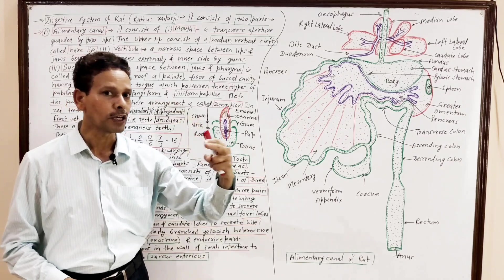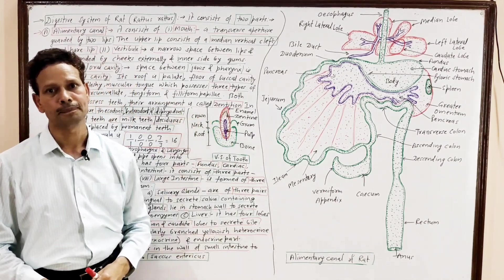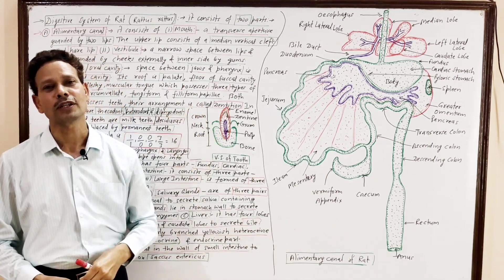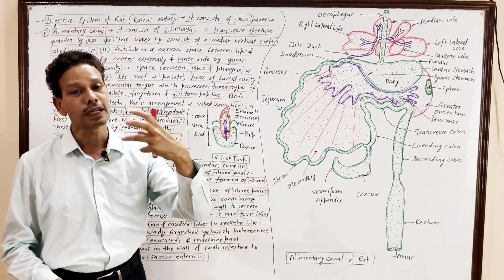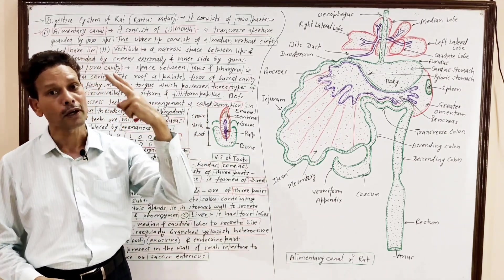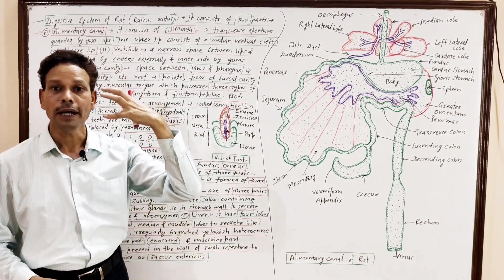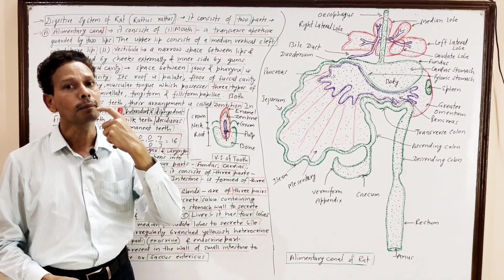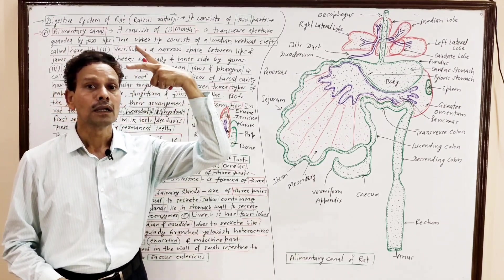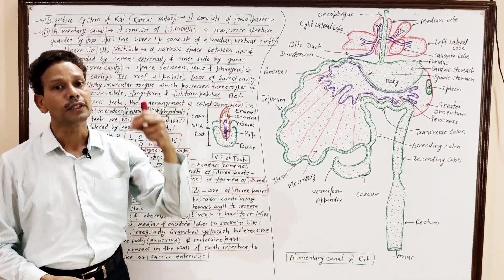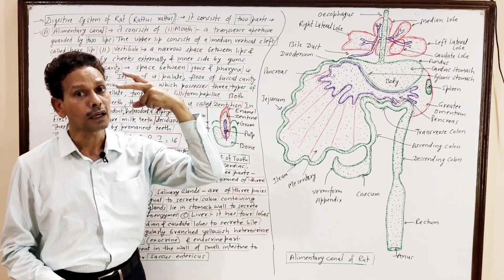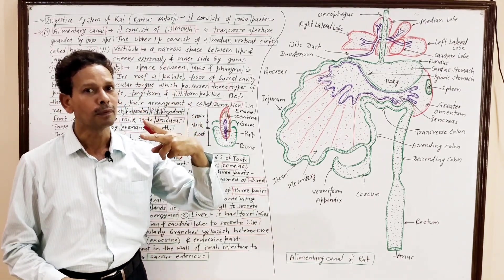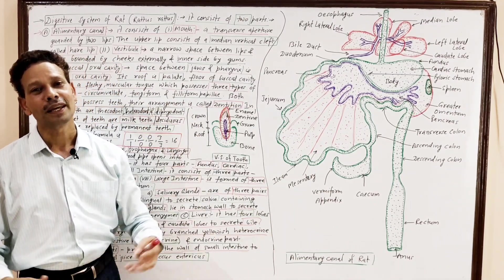The first part of the alimentary canal is the mouth. The mouth is a transverse slit-like aperture, and that aperture is guarded by a pair of lips — upper and lower lips. Both lips are movable. In the upper lip, a median vertical cleft is present.